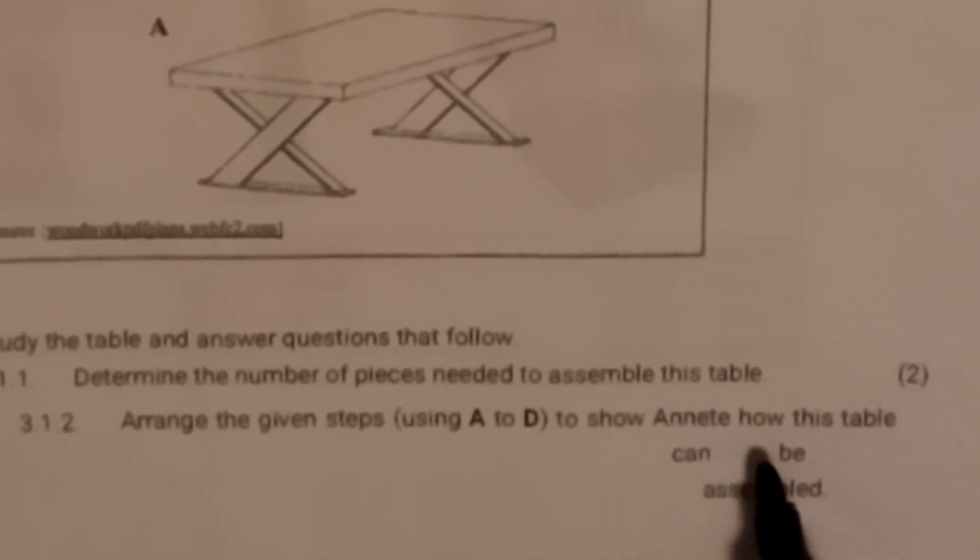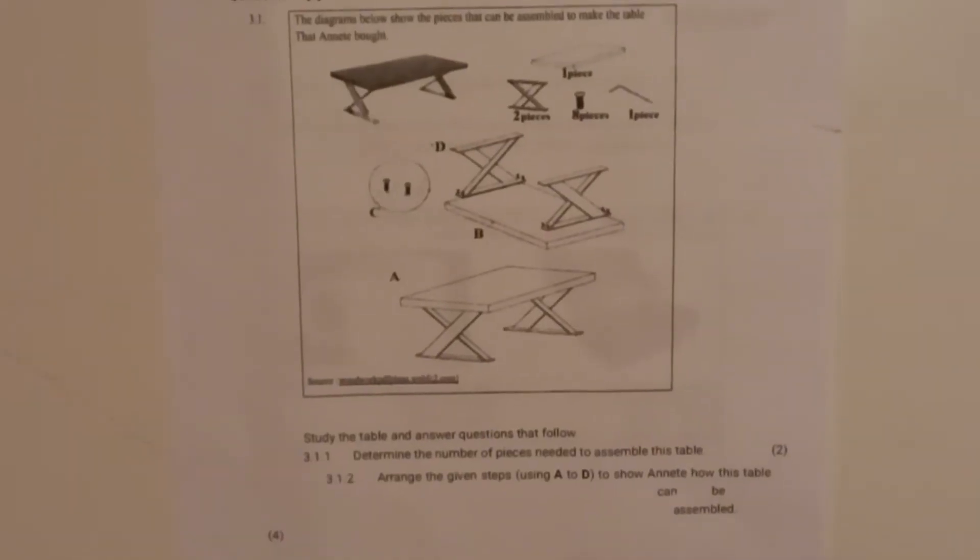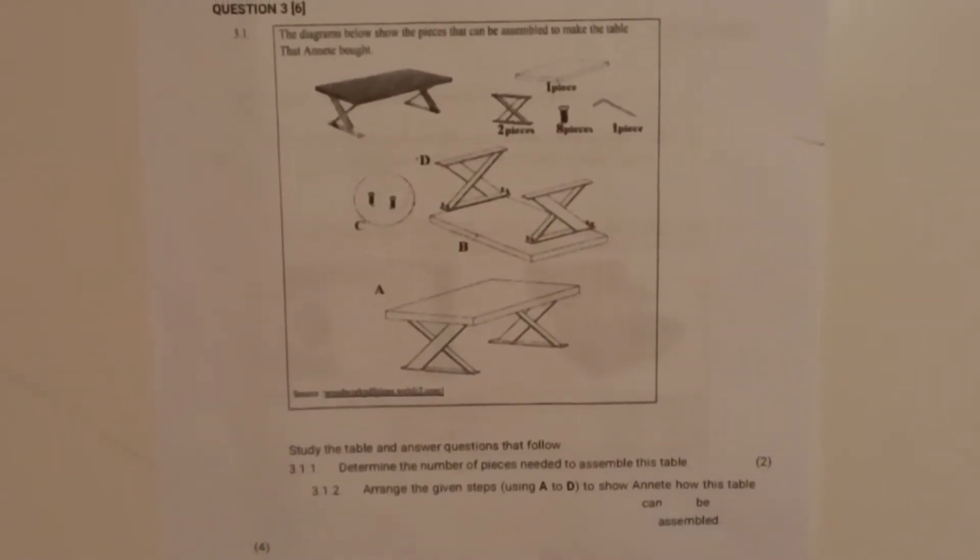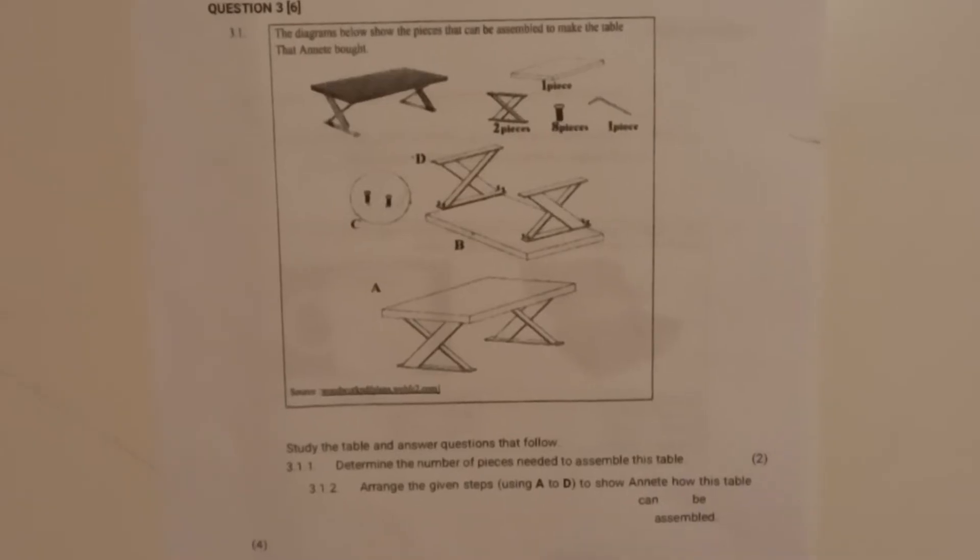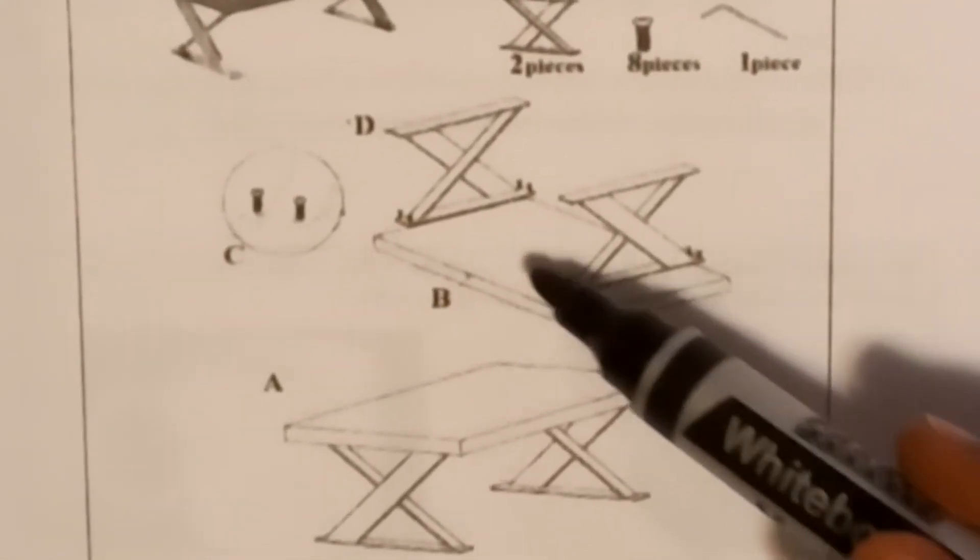Next question, 3.1.2, says arrange the given steps using A to D to show Annele how this table can be assembled. In your answer you're going to say I'm going to start with A, then to B, then to C, according to the correct steps. When you look, to be able to arrange the table, he needs to put B first.